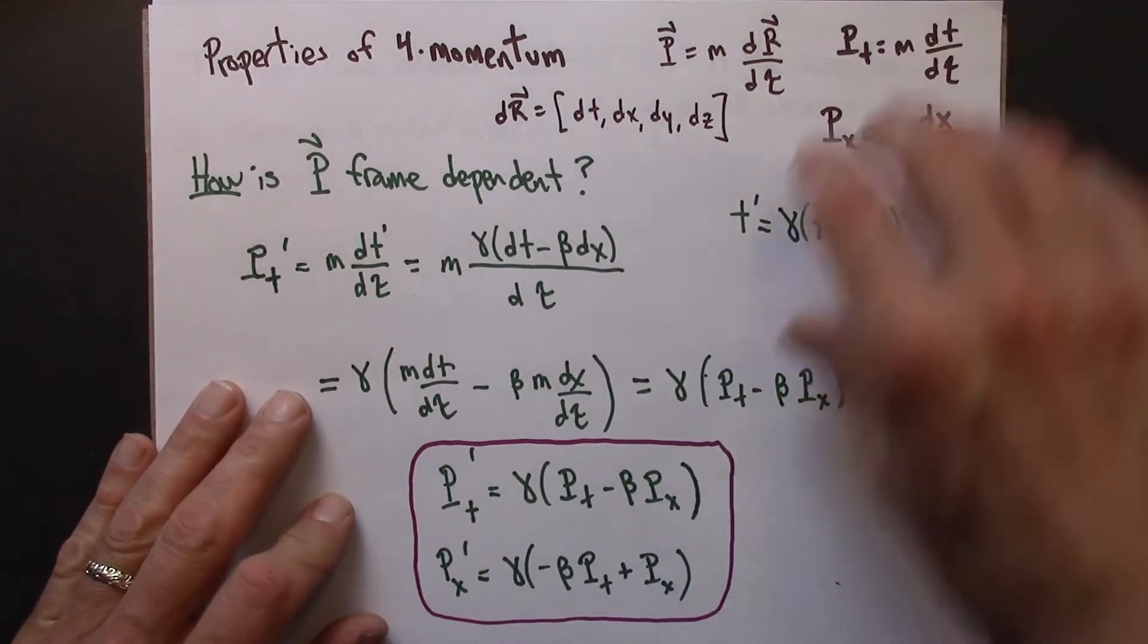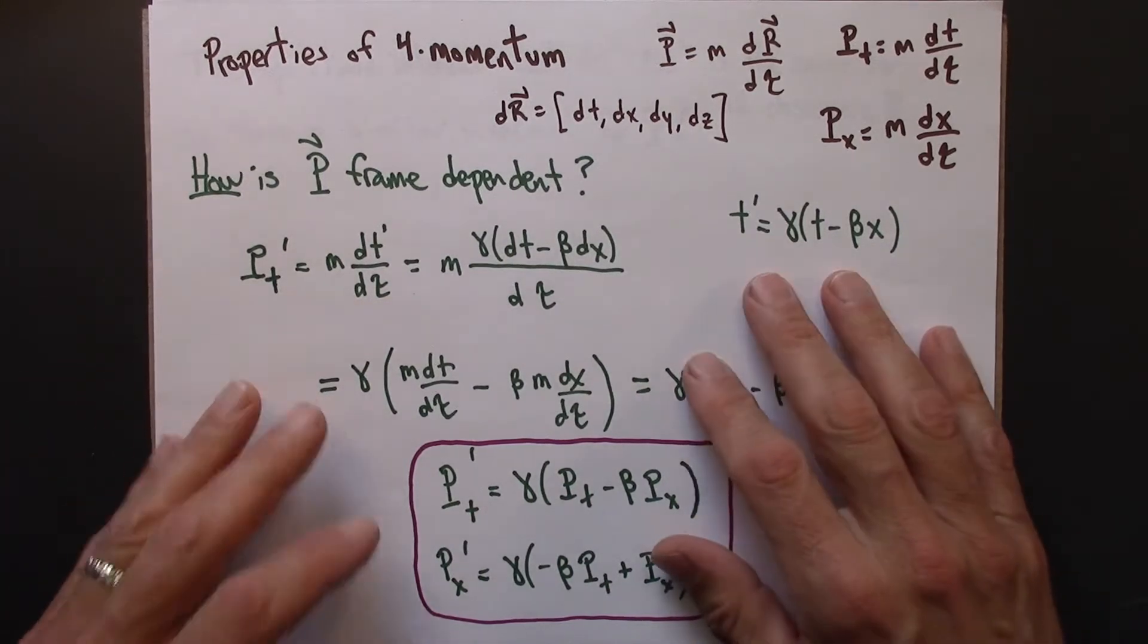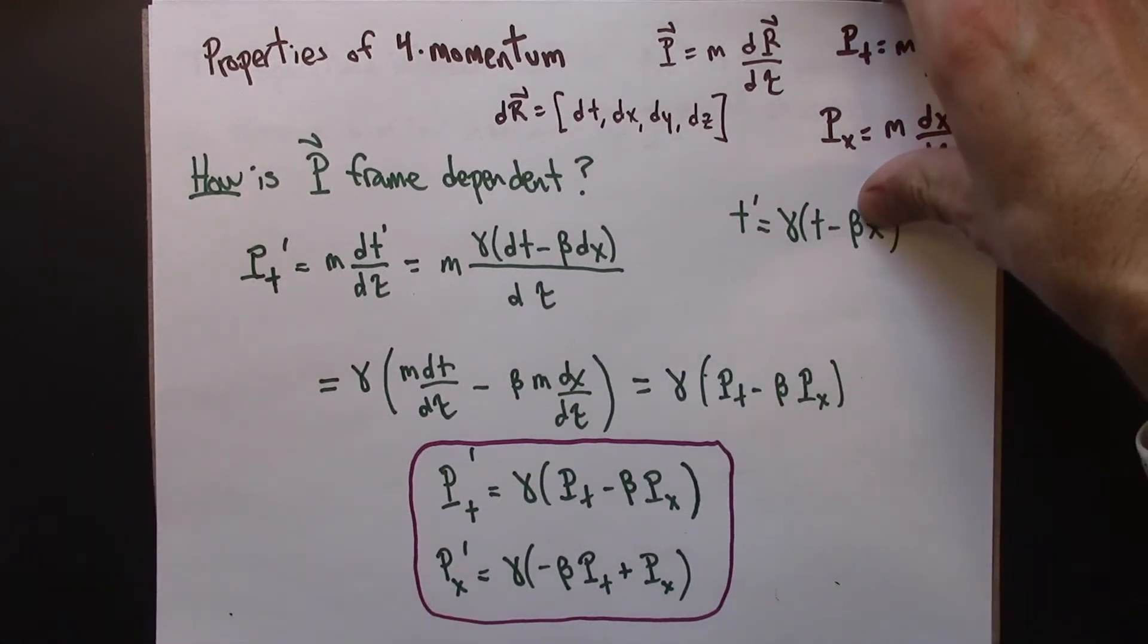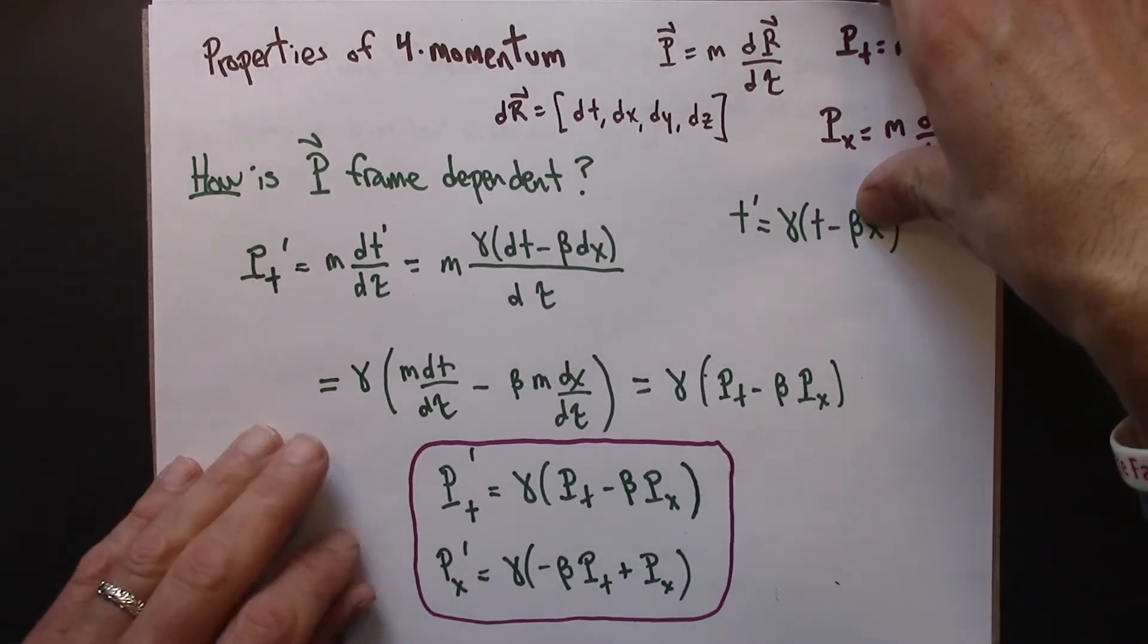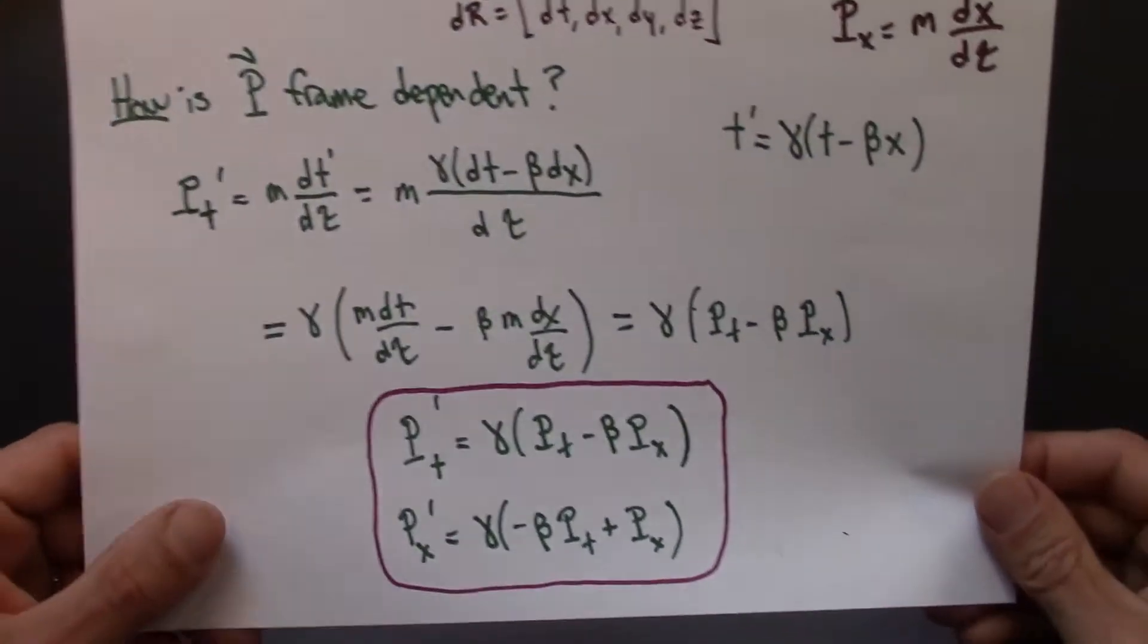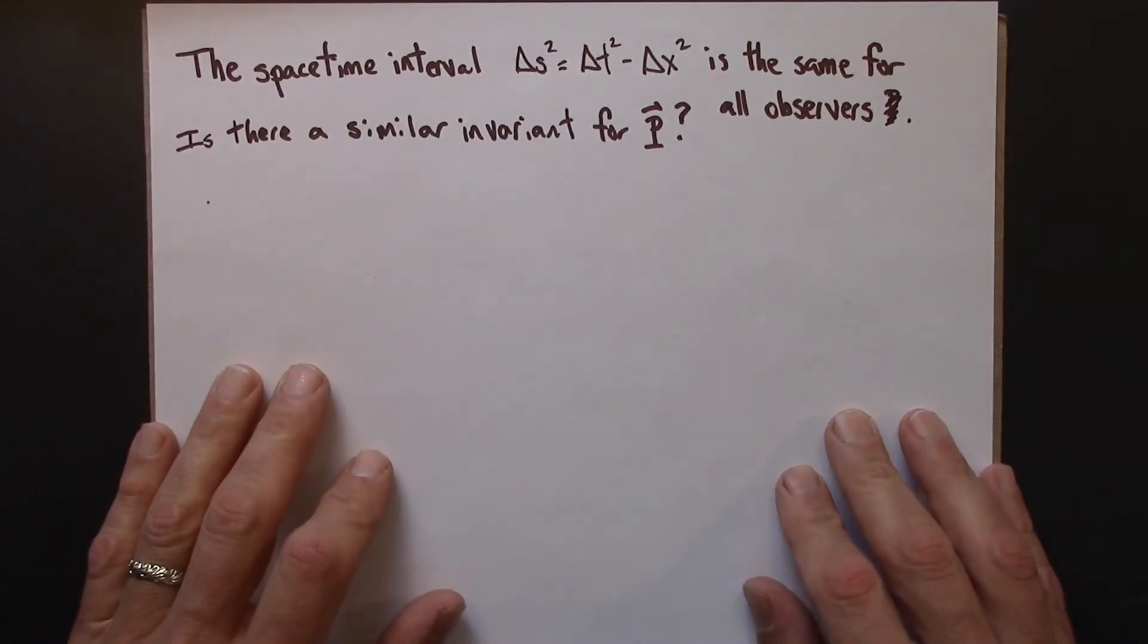So that leads us to wonder, can we go further with this similarity between momentum and space-time coordinates? Since they transform in the same way, maybe they have some similar mathematical properties. That'll be our starting point for this video where we'll explore another important property of form momentum.